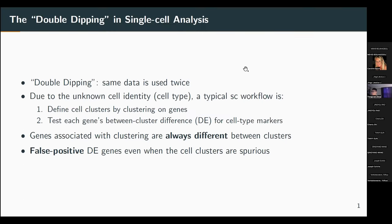The first question is: what is the double-dipping problem in single-cell analysis? When we talk about double-dipping, we mean that the same data is used twice. This is very common in single-cell analysis because usually we don't know the cell identity — in most cases, cell types. So we use another approach: first, we define cell clusters by clustering on all the genes together; second, we test each gene's between-cluster difference.